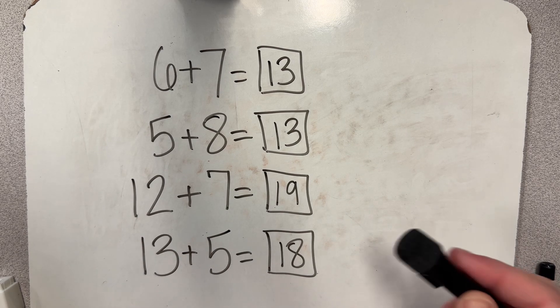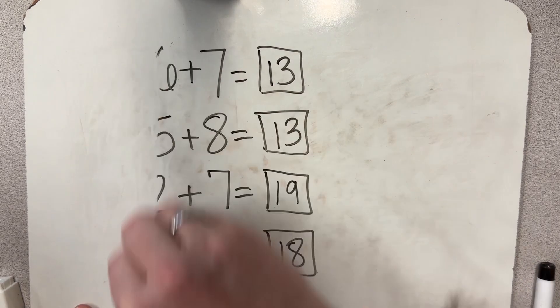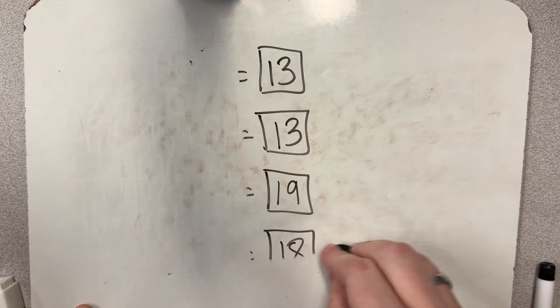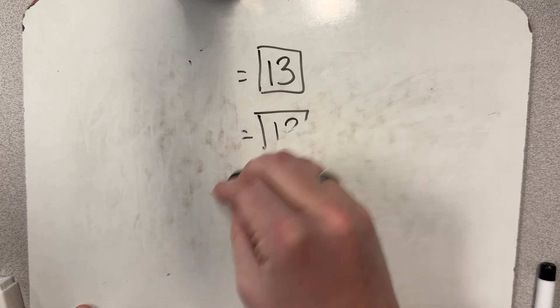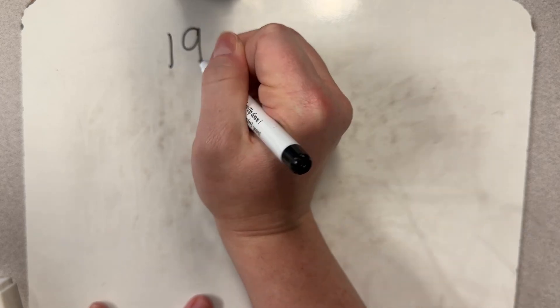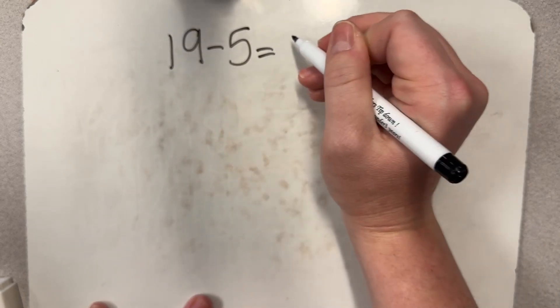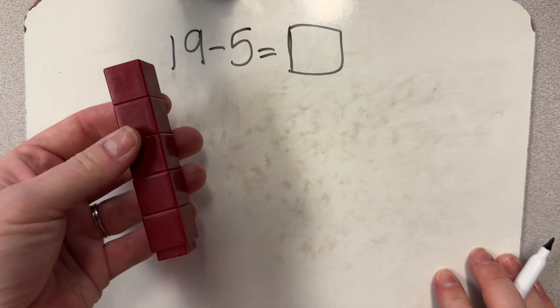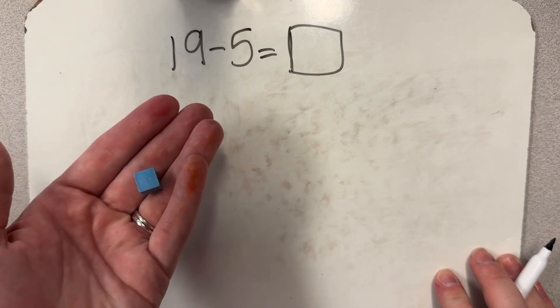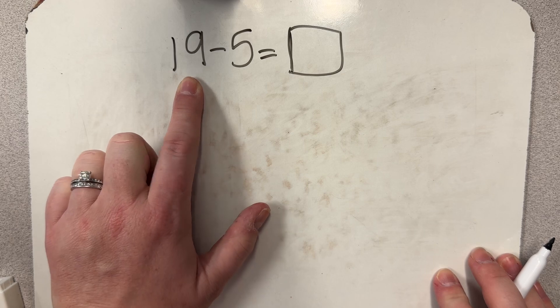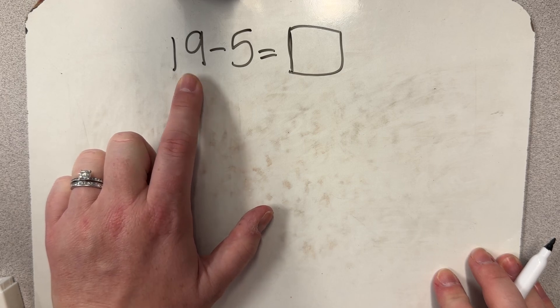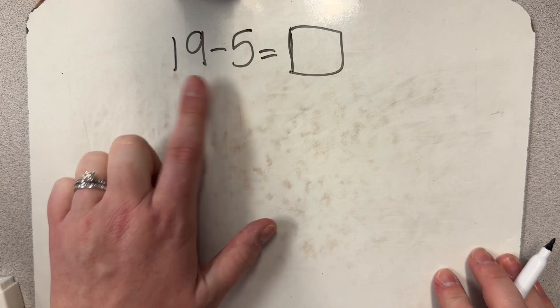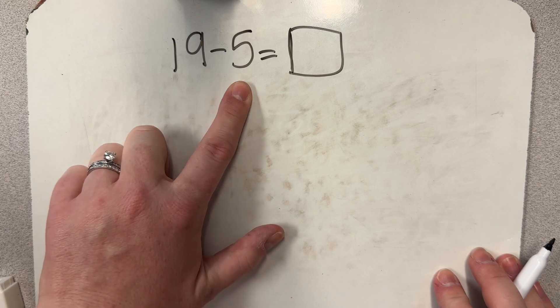We can use these same strategies to subtract. And when you subtract, they're going to be very similar with your strategies. So we're going to start with 19 minus five. Your build does not look any different. You would still build using your manipulatives. Either kind is great. You're going to build with this first, their greatest number, since that is what we are taking away from. So I would build 19 and then show how I took five ones away.